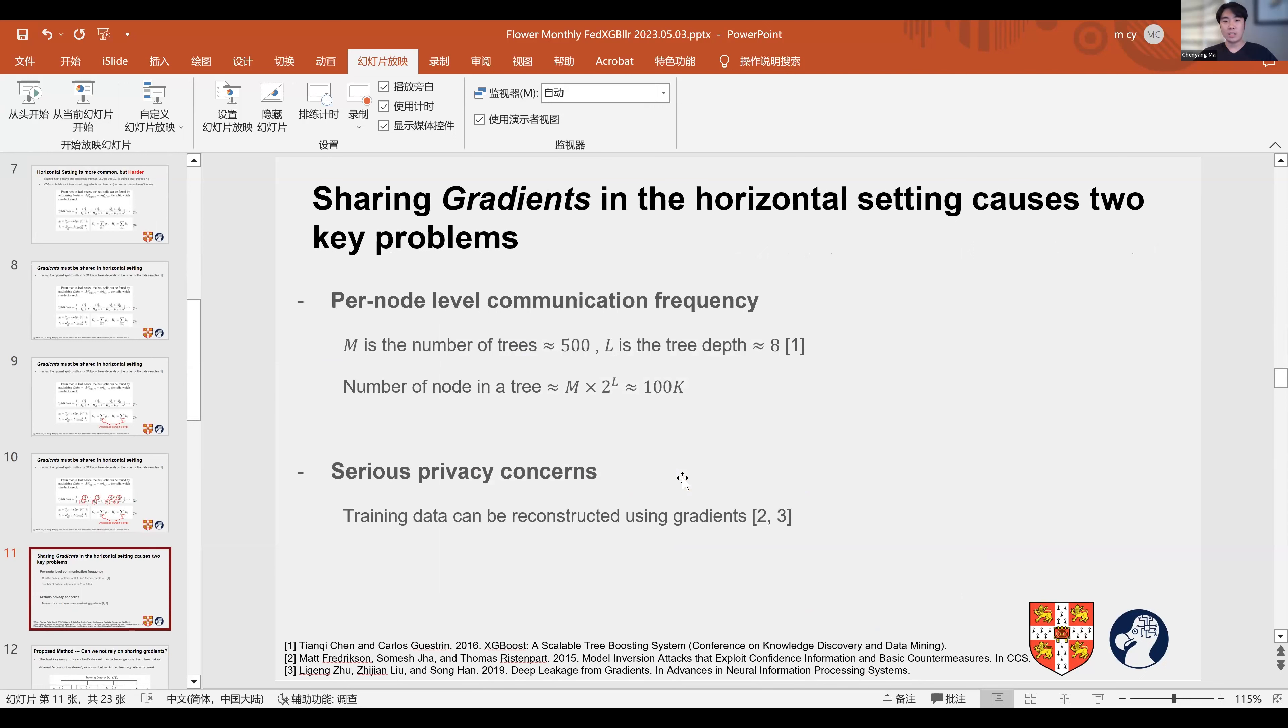We identify two problems that must be solved. The first problem is the per-node level communication frequency. The server needs to communicate with all clients at every splitting point. If we denote the depth of each tree as L and the number of trees as M, the number of nodes scales up to M times 2 to the power of L. As a trained XGBoost model commonly has a depth of 8 and 500 trees, the number of communication rounds can reach up to 100,000.